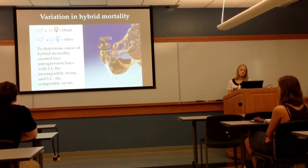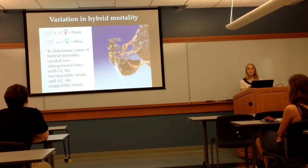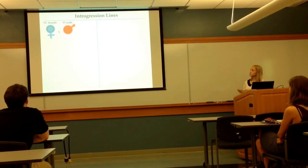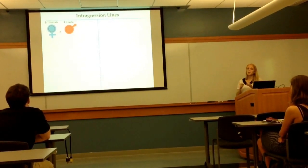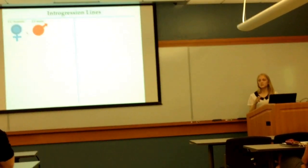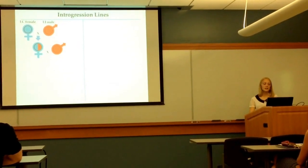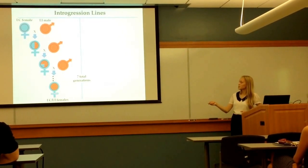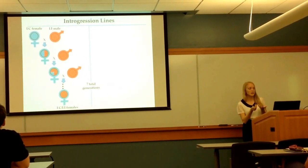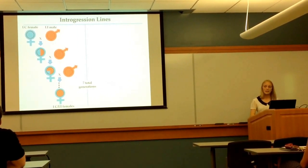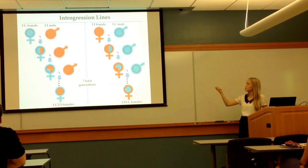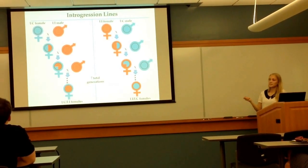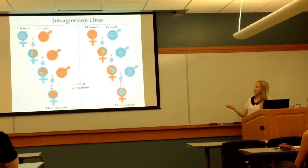In order to determine the cause of the hypermortality, I wanted to create two introgression lines using these LI and LC strains. This shows how I generated those introgression lines. First I took an LC male and mated it to an LI female — here the outer color represents the cytotype and the inner color represents the composition of nuclear DNA. I then took their daughters and mated them to LI males, took their daughters, mated them to LI males, and so on for seven total generations, generating an LC-LI introgression line that has cytoplasm from LC and nuclear DNA of LI. Then I mated LI females with LC males, took their daughters, mated them with LC males, and so on for seven generations, until I generated an LI-LC introgression line that has cytoplasm of LI and nuclear DNA of LC. Essentially, for this introgression I was able to switch the nuclear DNAs.